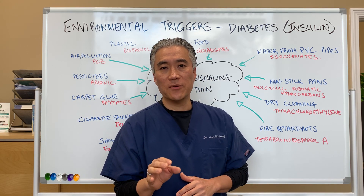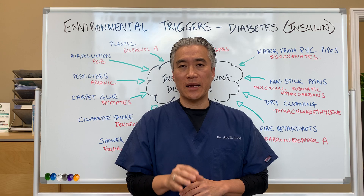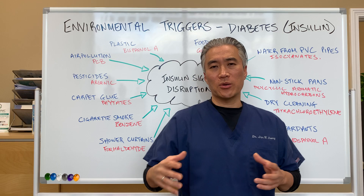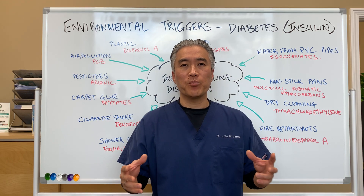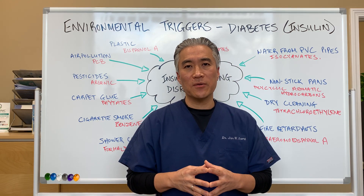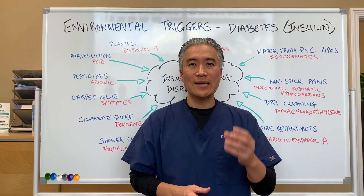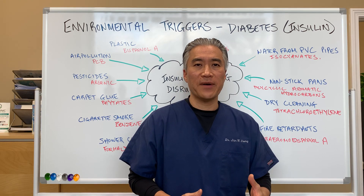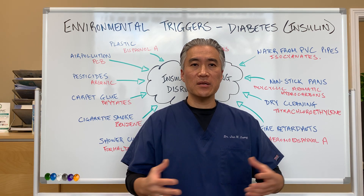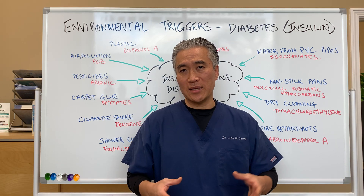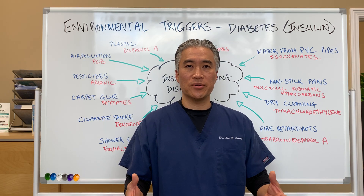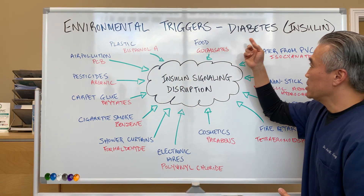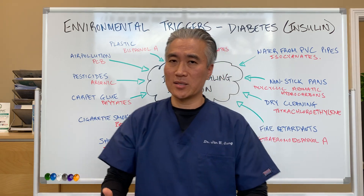Today we're going to talk about environmental factors or triggers that affect diabetes. Oftentimes we talk about eating food or immune disease, but there are a lot of environmental factors that influence how your insulin signals your cells. It's very important to understand these chemical factors that can severely impact not just the pancreas and diabetes, but other health conditions. Let's go into it — environmental triggers that affect diabetes, or insulin signaling.